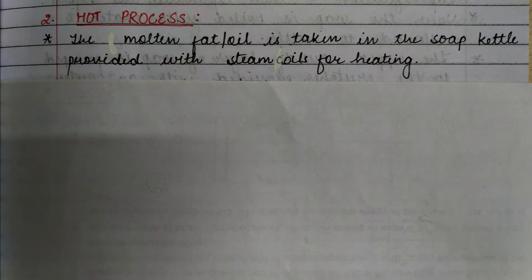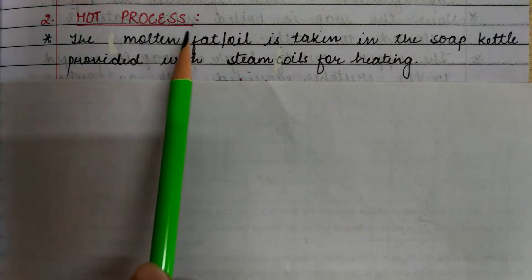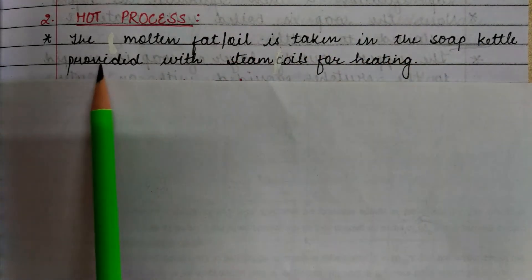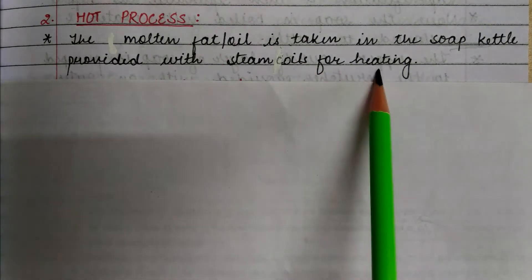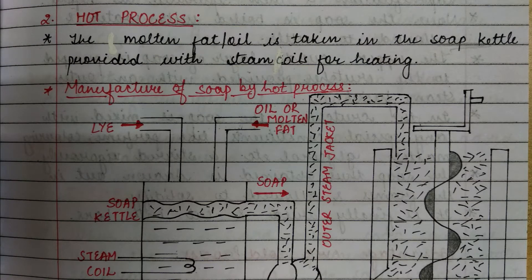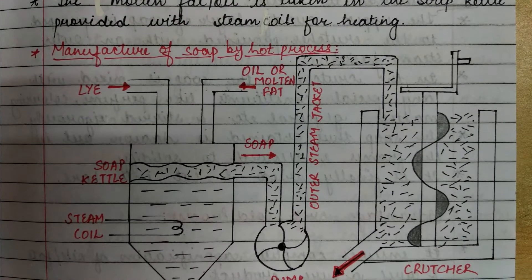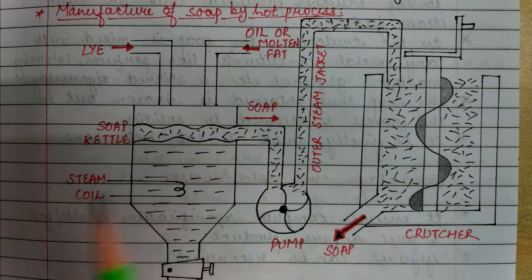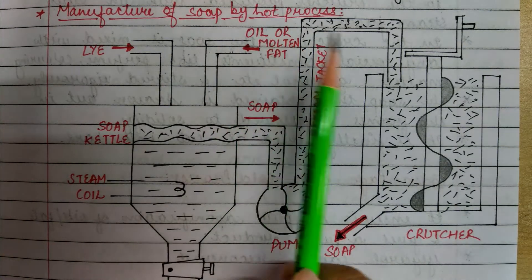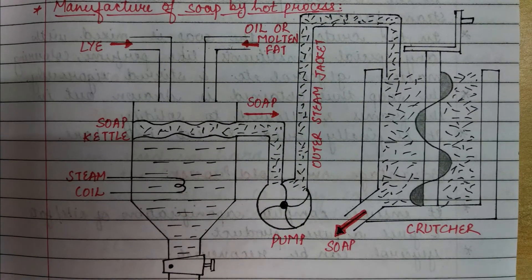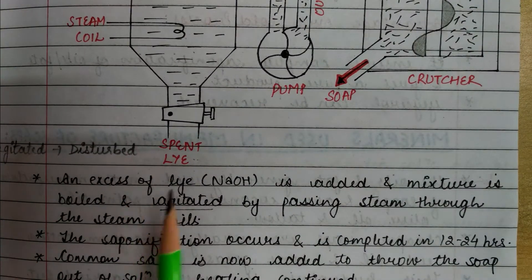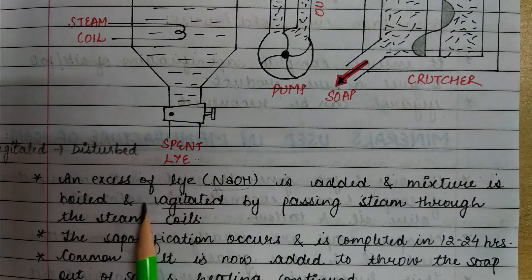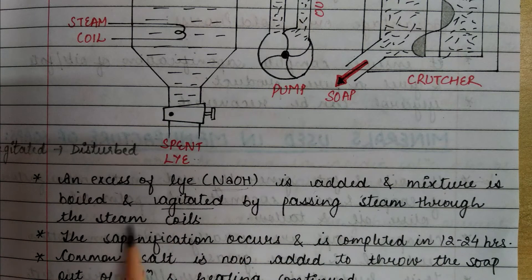The second method is the hot process. The molten fat or oil is taken in a soap kettle provided with steam coils for heating. An excess of lye, that is sodium hydroxide, is added, and the mixture is boiled and agitated by passing steam through the steam coils.